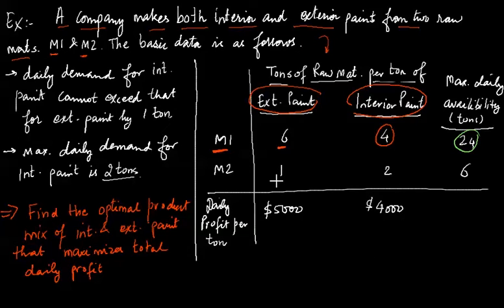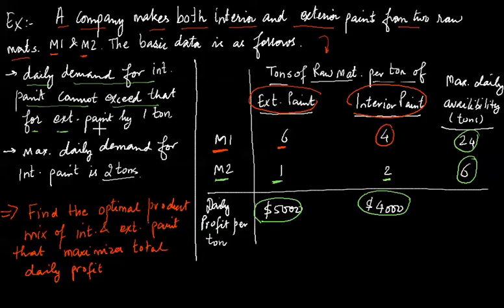Similar data can be found for exterior paint when making from raw material M2 and interior paint from raw material M2, and the daily limit is 6 tons per day. If you sell exterior paint, the daily profit is $5,000 per ton, and the interior paint profit is $4,000 per ton. There are two market surveys which tell you that the daily demand for interior paint cannot exceed that for exterior paint by 1 ton. This is one condition you need to keep in mind. And the second is that the maximum daily demand for interior paint is 2 tons.